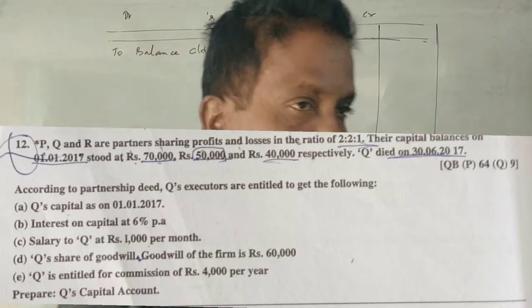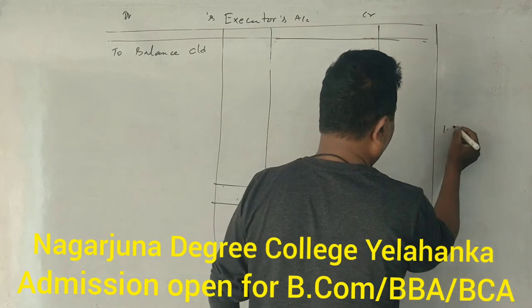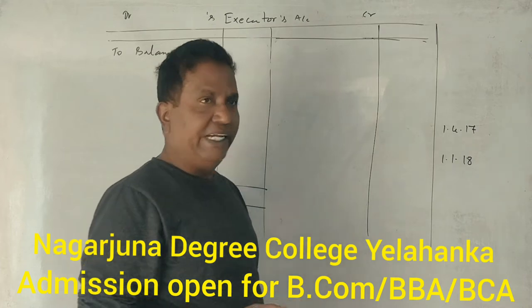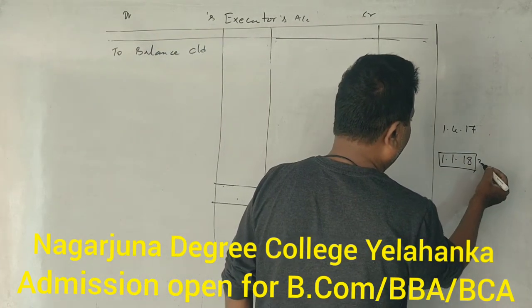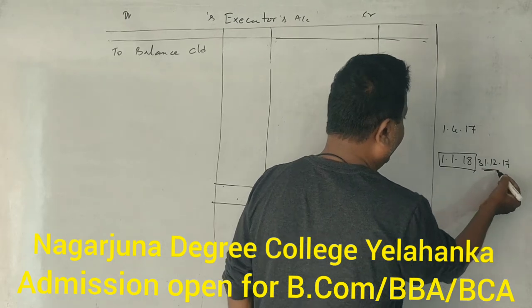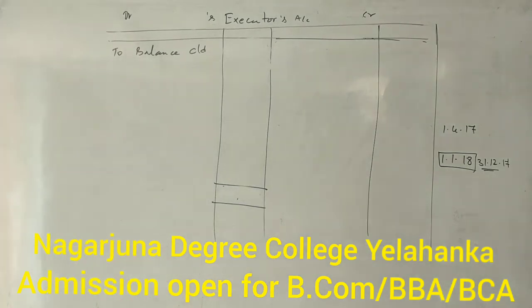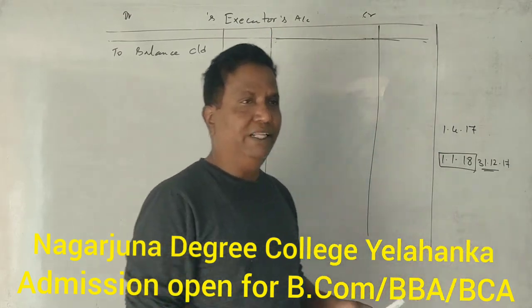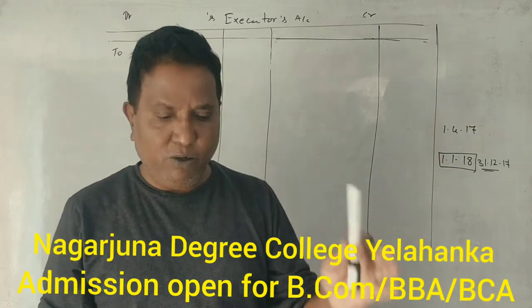Since Y died, the business period runs from 1st April 2017 to 1st January 2018 — that is, from April to December, which is 9 months. So we calculate figures for that 9-month period from April to December.